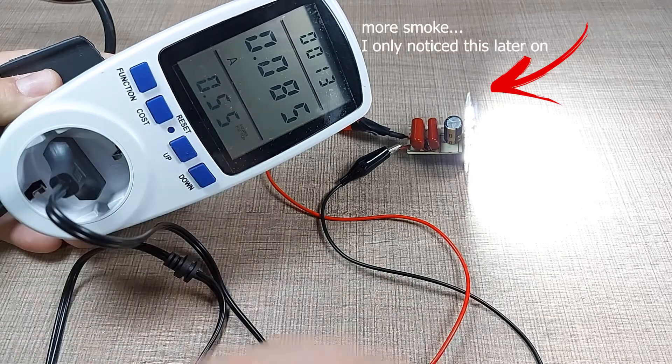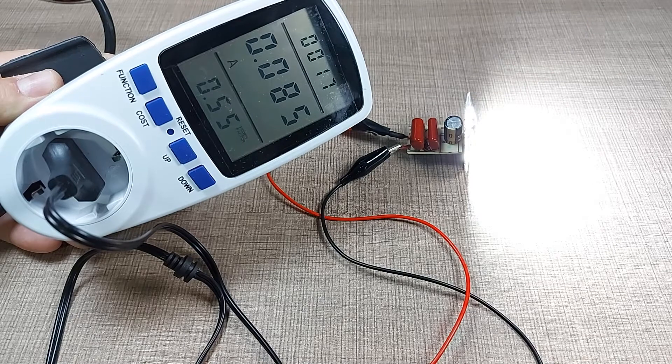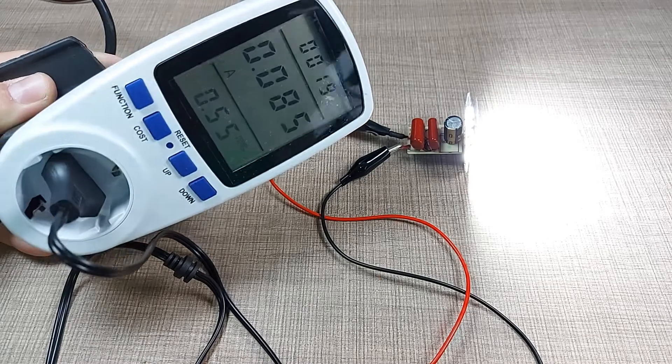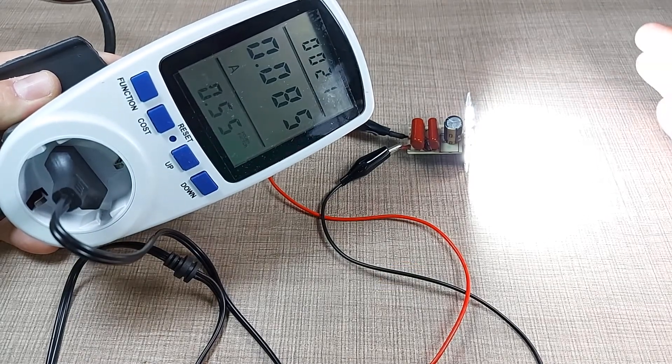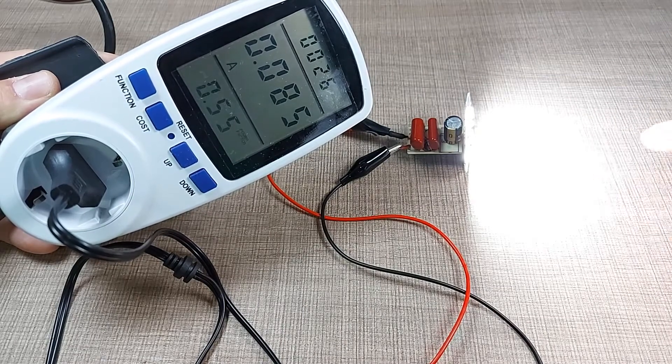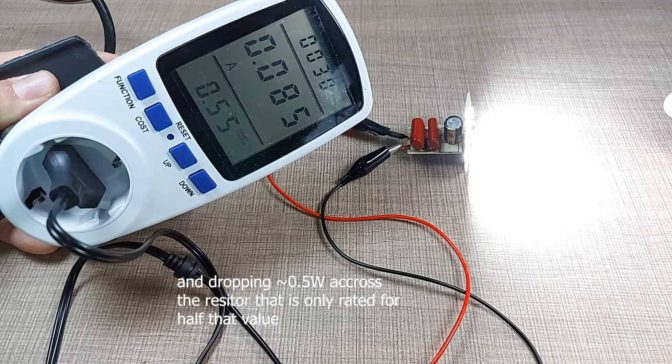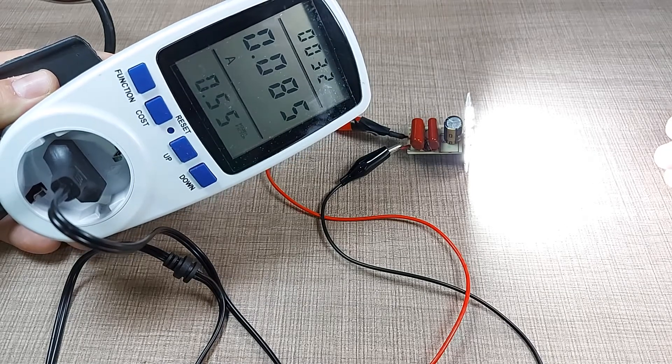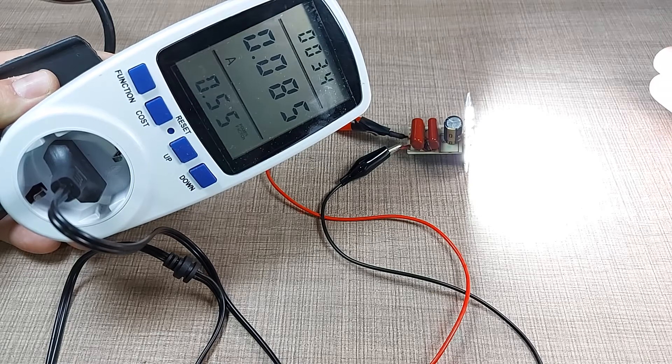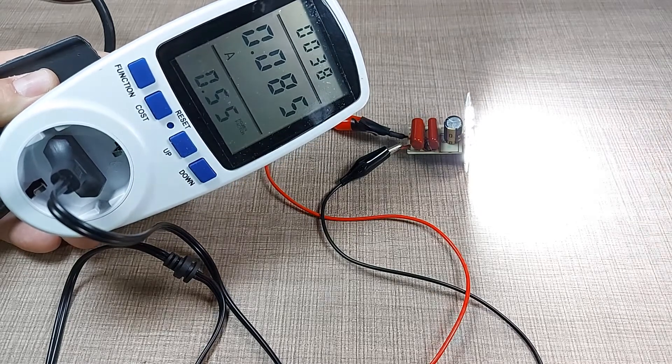And you know what, we're exactly at the same output. Let's see what's the current, 386 milliamps. So basically that meant that the math that we did was correct, and we're basically now using the same output but without that single LED. We're wasting a bit of power on the resistor, but that's not a problem because we now have a working module that we can still use in some of our projects.